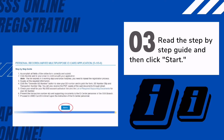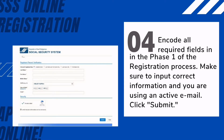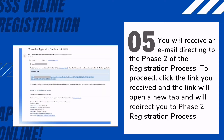Third, read the step-by-step guide first, and then click Start. Fourth, encode all required fields in Phase 1 of the registration process. Make sure to input correct information and use an active email address. Tick the box beside 'I am NOT a robot,' then click the small box below it to certify that the encoded information is true and correct. Click Submit.